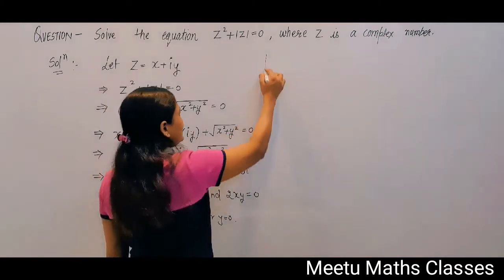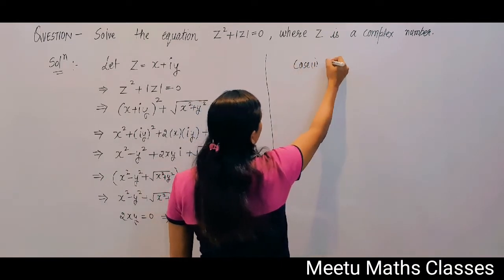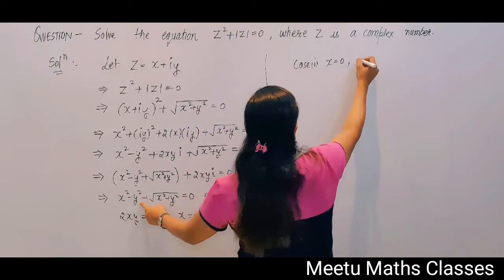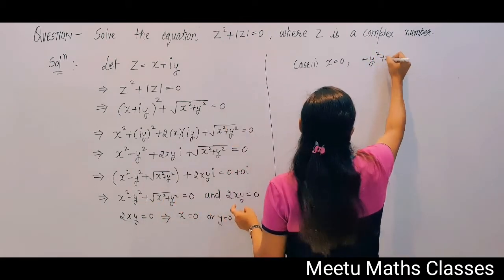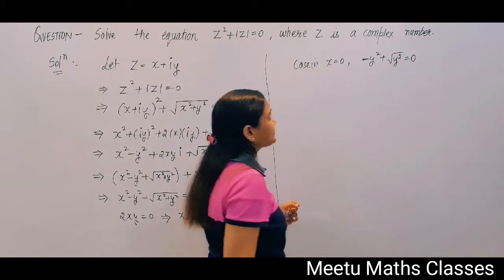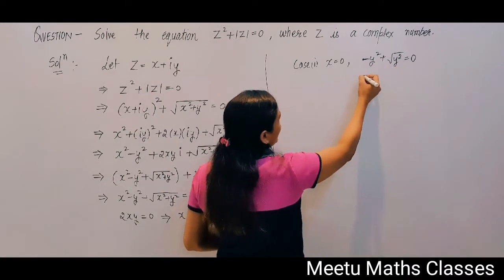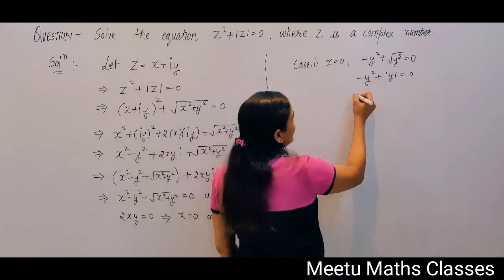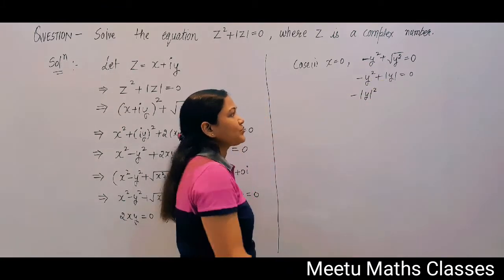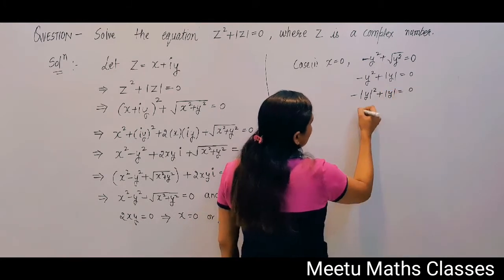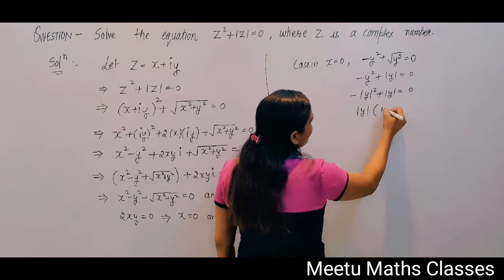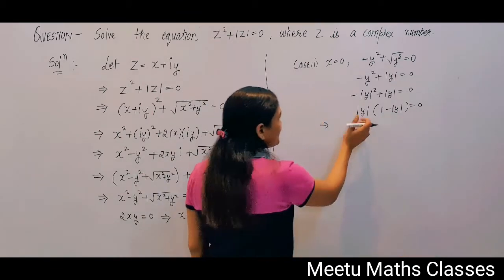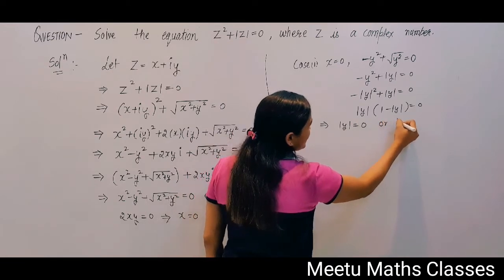Case 1: Consider x = 0. When x = 0, from the real part equation we get −y² + √(y²) = 0, which gives −y² + |y| = 0. We can write this as |y|(1 − |y|) = 0, so either |y| = 0 or |y| = 1.